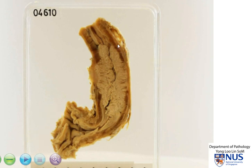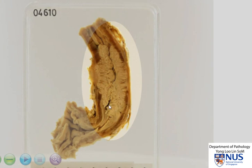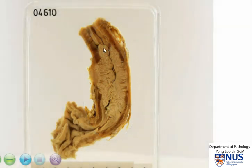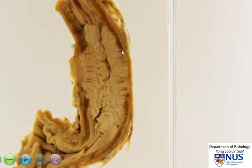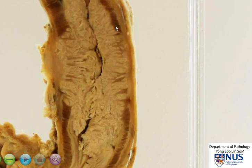The pathology lies in the middle to the distal esophagus, and what we are seeing here is a rather extensive tumor mass. This appears to arise from the esophageal mucosa, and it is infiltrating into the submucosa and even into the muscularis propria.